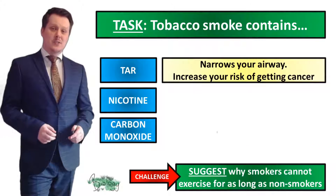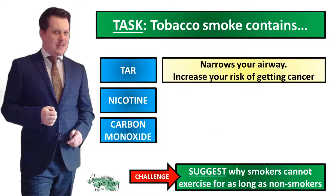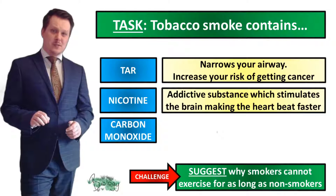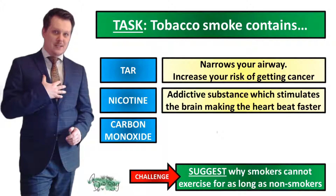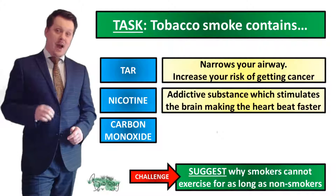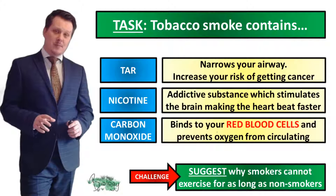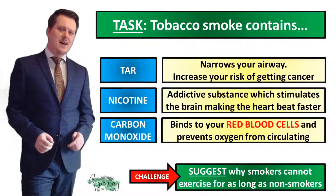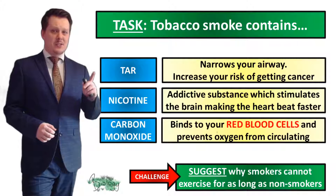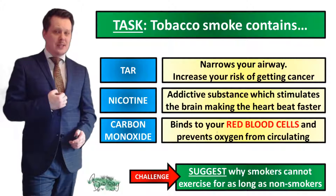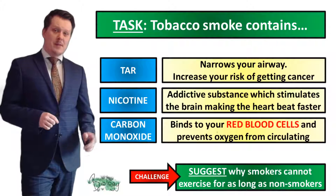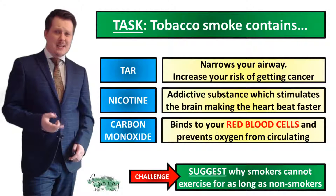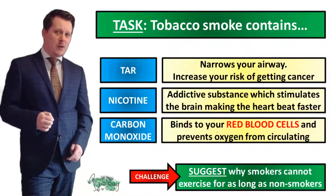So, starting with tar — this is the substance that narrows your airways and increases your risk of getting cancer; remember, we called it a carcinogen. Nicotine is the addictive substance which stimulates the brain and makes the heart beat faster — we said it was a stimulant. Carbon monoxide is the substance that binds to your red blood cells and prevents oxygen from circulating around the body. Smokers cannot exercise for as long as non-smokers because tar narrows the airways making it difficult to get air into the lungs, and carbon monoxide binds to red blood cells, stopping oxygen from circulating, meaning less energy is released by aerobic respiration.